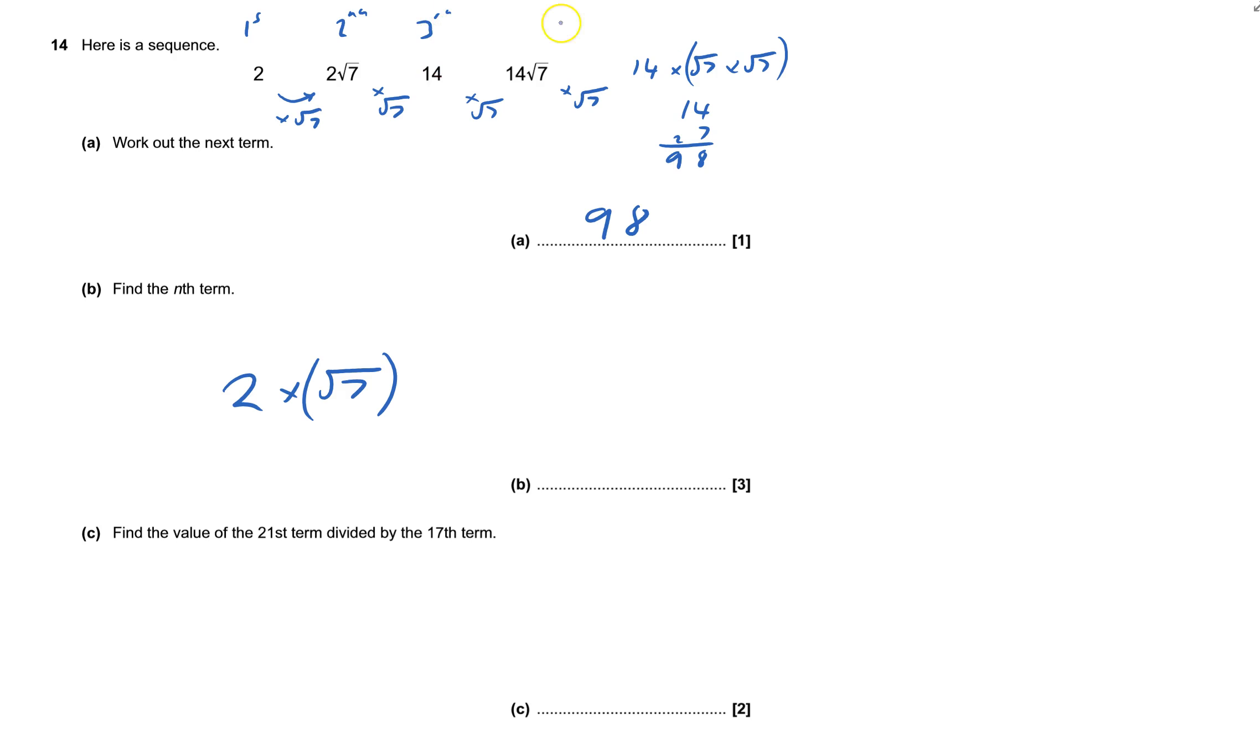The first term hasn't got any, the second term I've got one root 7, the third term I've got two root 7s, the fourth term I've got three root 7s. So basically each time I've got times by root 7 by one less than that number.